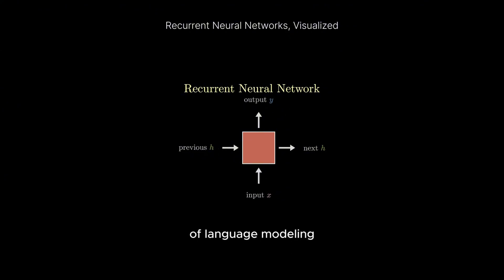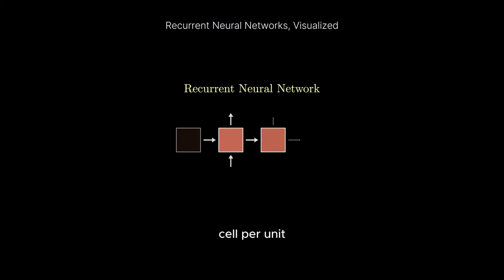In the context of language modeling, I create a cell per unit I'm using. RNNs are great because there's no fixed length for each input.